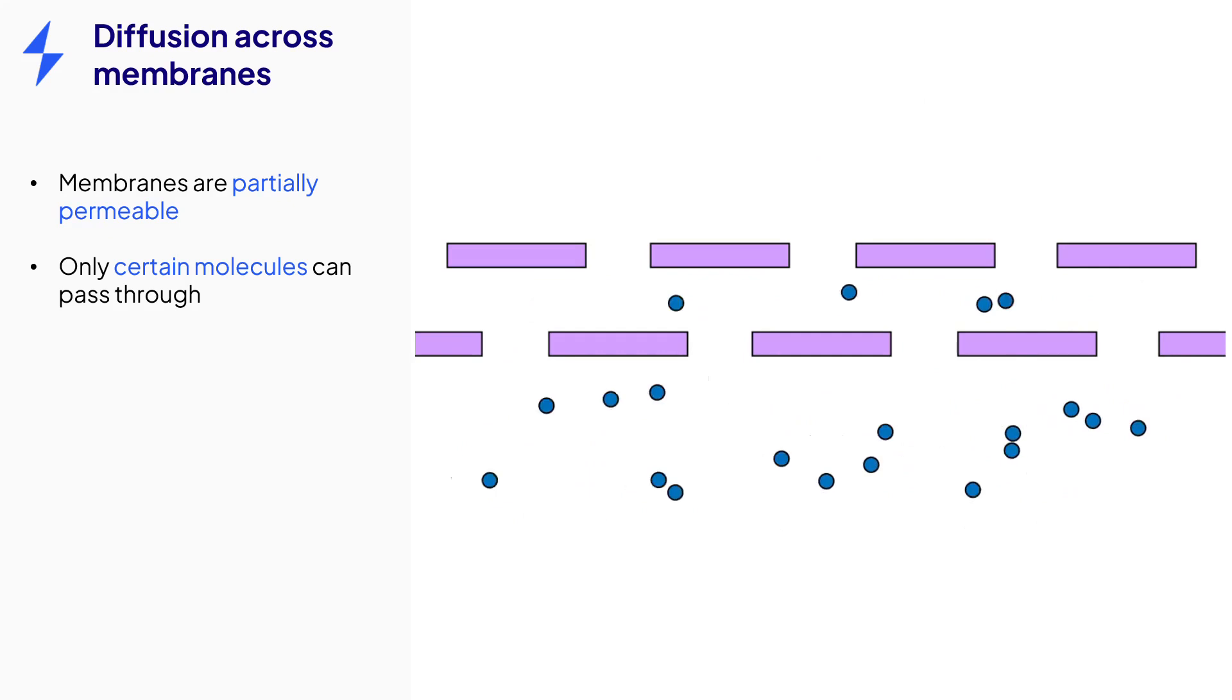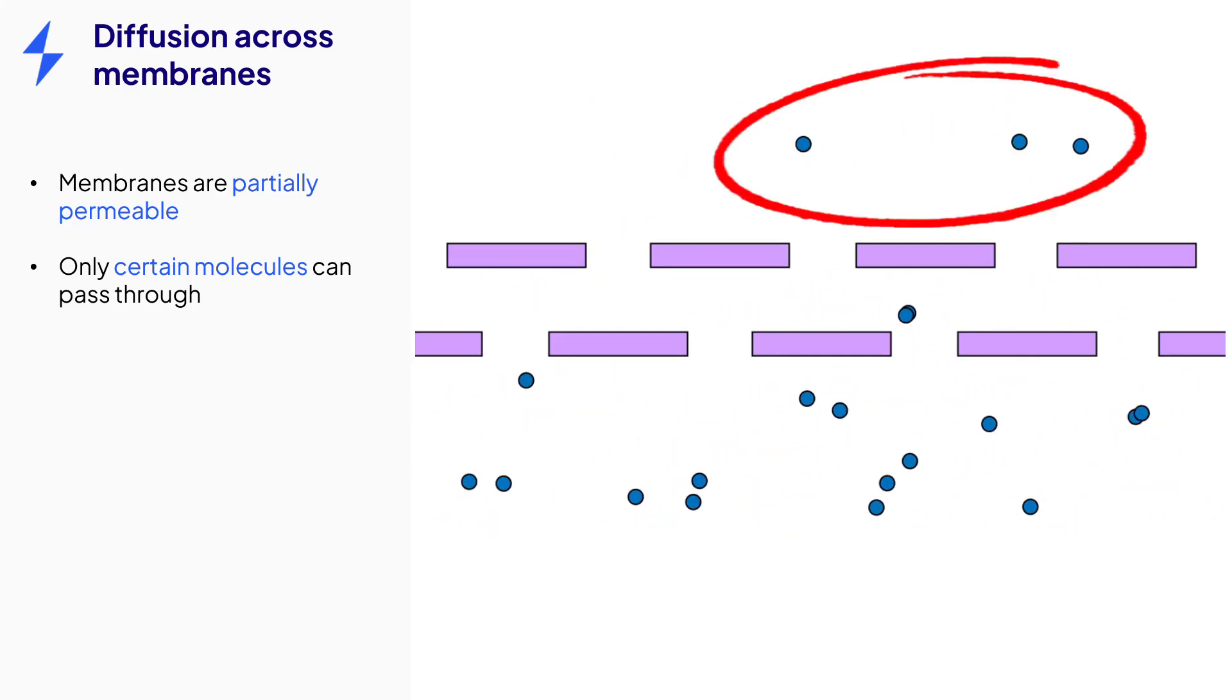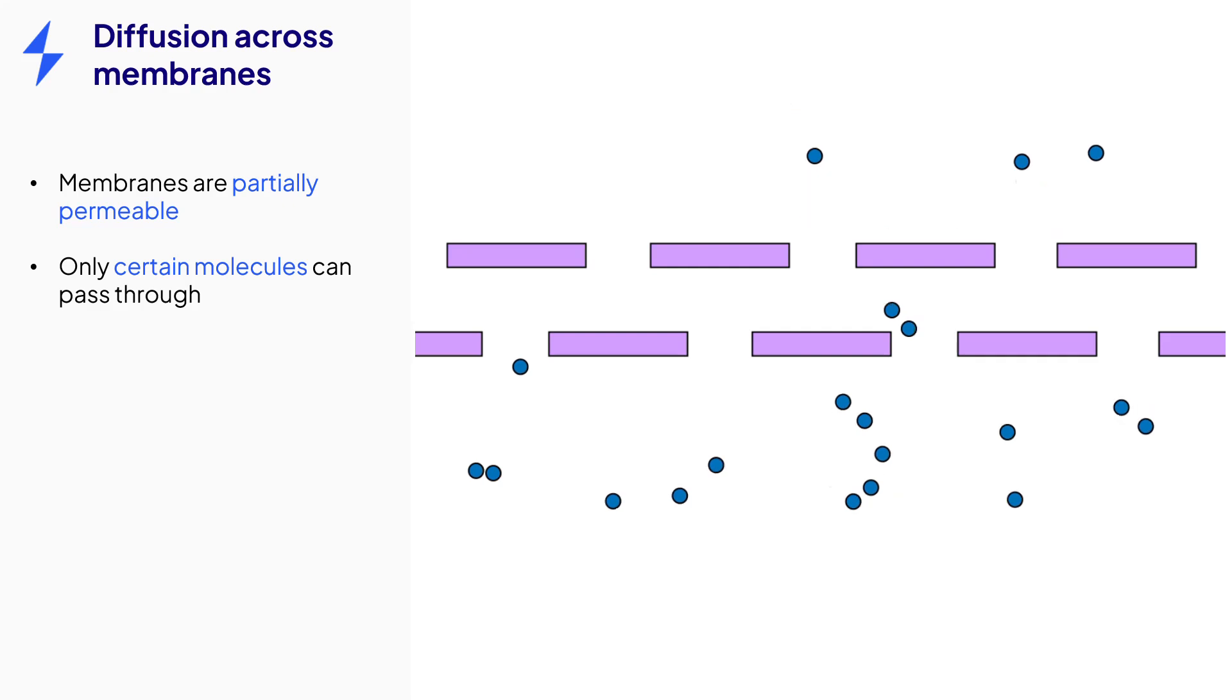Here we can see the molecules moving around randomly. Some of them cross the membrane through the pores. You can see three here. After enough time, the molecules will be evenly distributed on each side of the membrane.